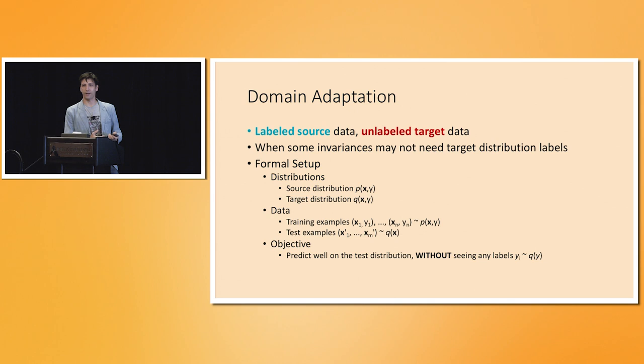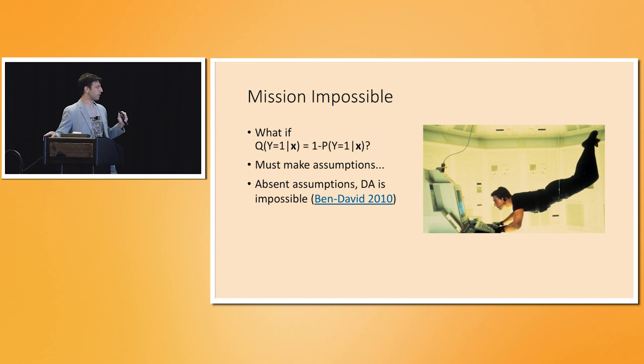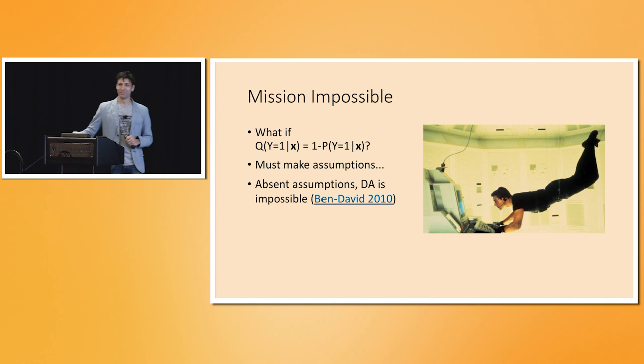A lot of papers just state the problem as: labeled source data, unlabeled target data, we want good predictions. The problem is this is impossible without additional assumptions. If source and target distributions differ, that alone isn't enough to know it's solvable. God could decide the labeling function is turned upside down — cats are now called dogs and dogs are now called cats. That's one way source and target data could differ.